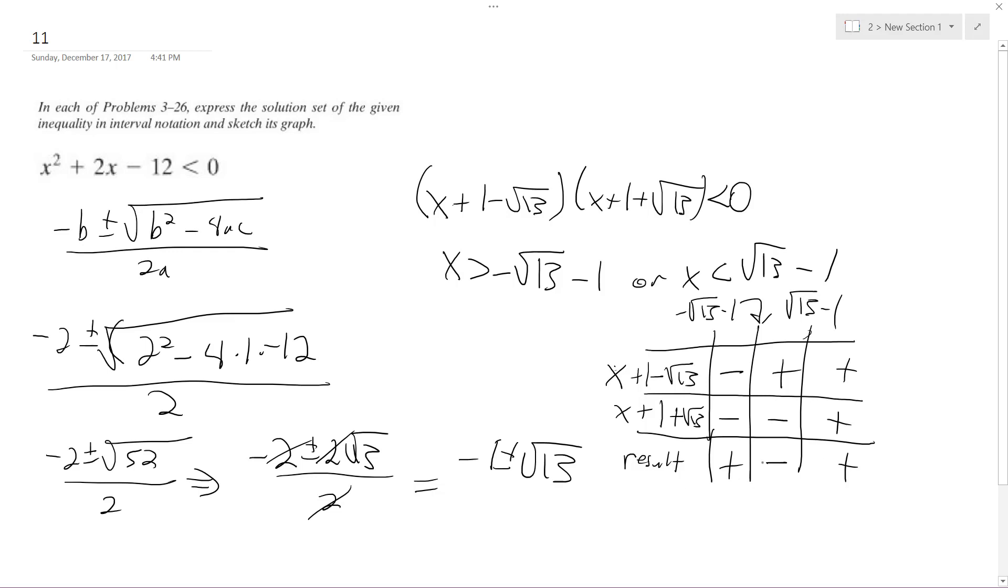So that means, based off of this, it's only valid here, it's only less than zero here at the negative solution. So that means x is between negative 1 minus square root of 13, and negative 1 plus square root of 13, and on a number line,